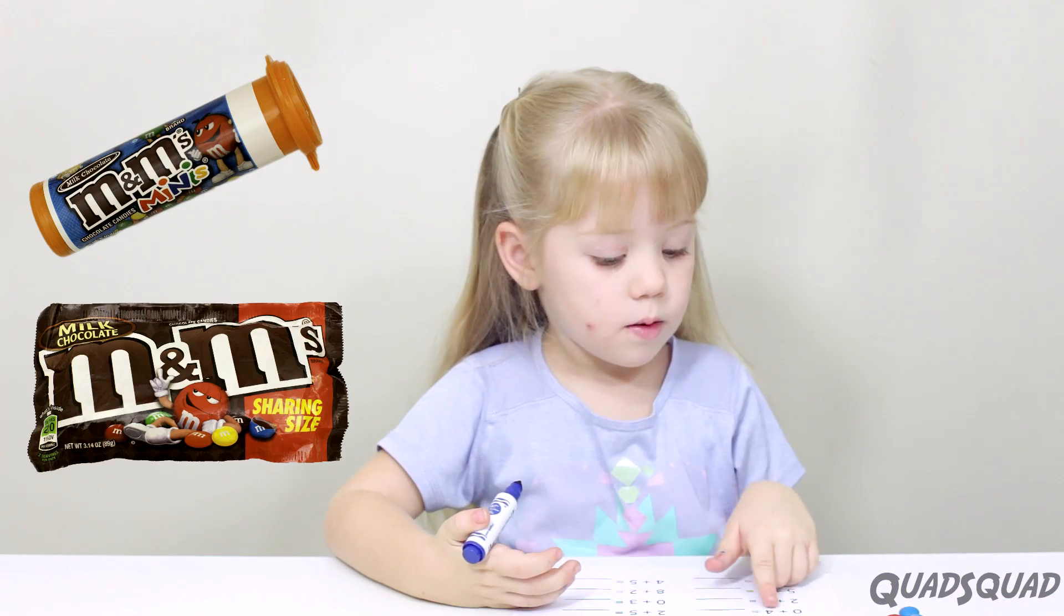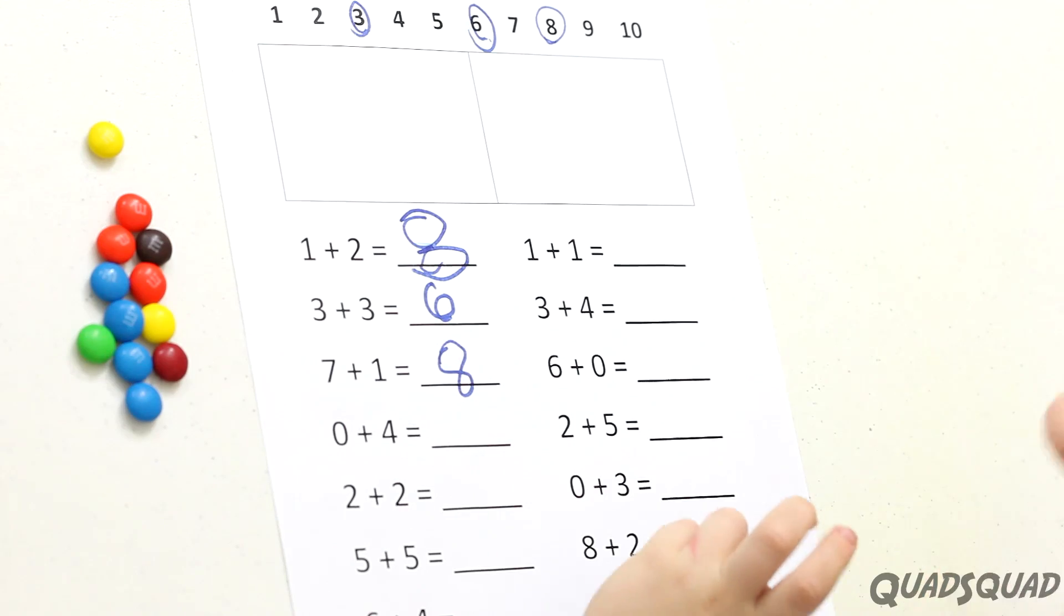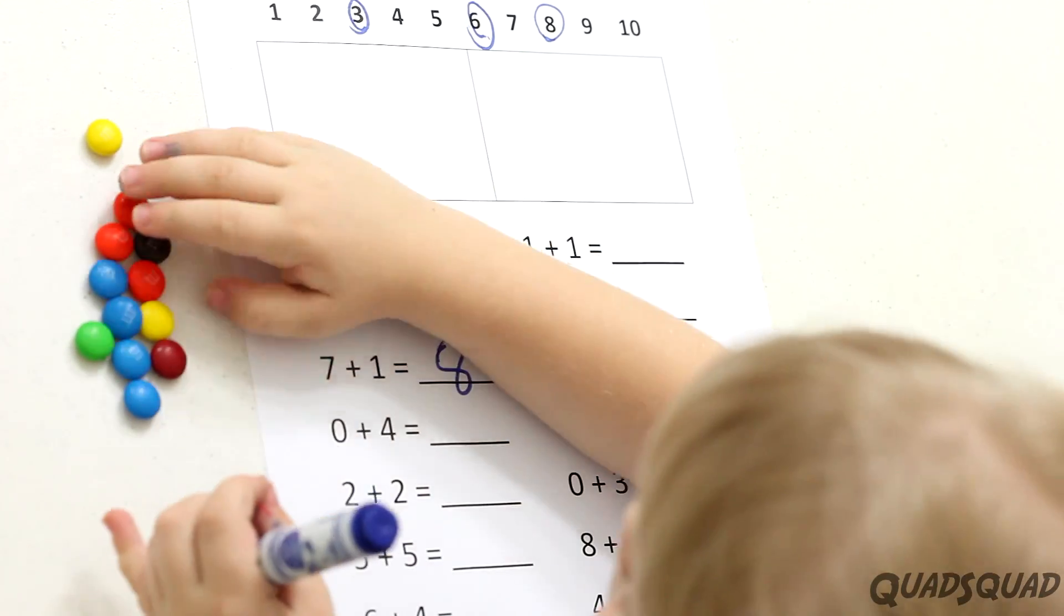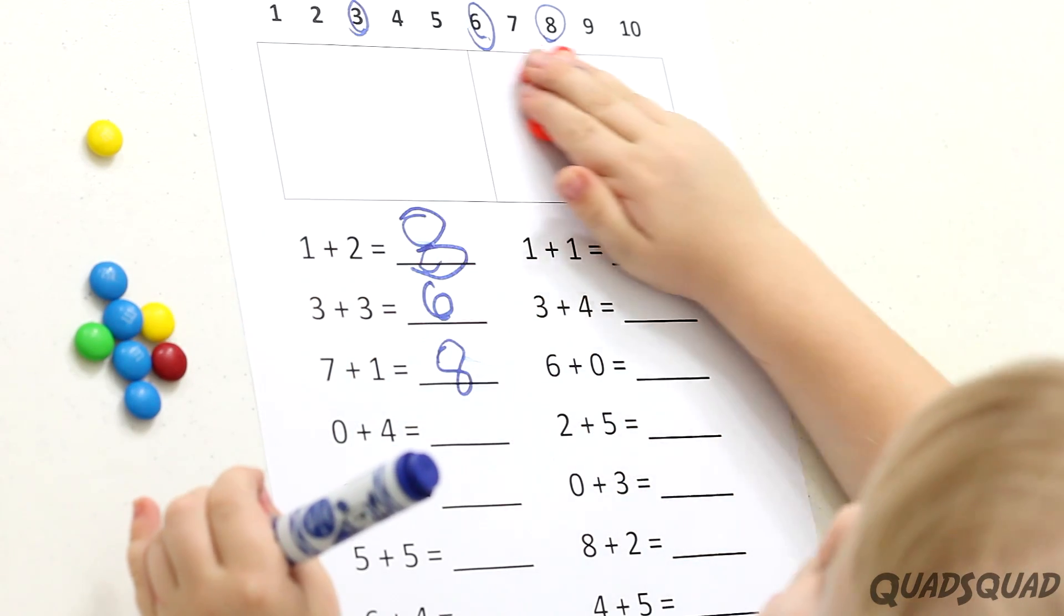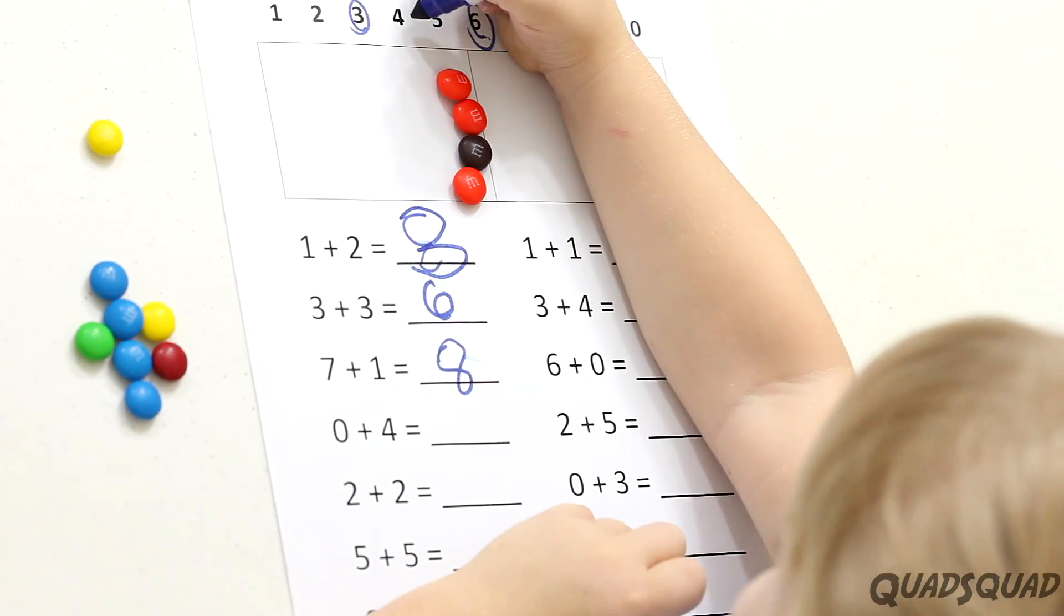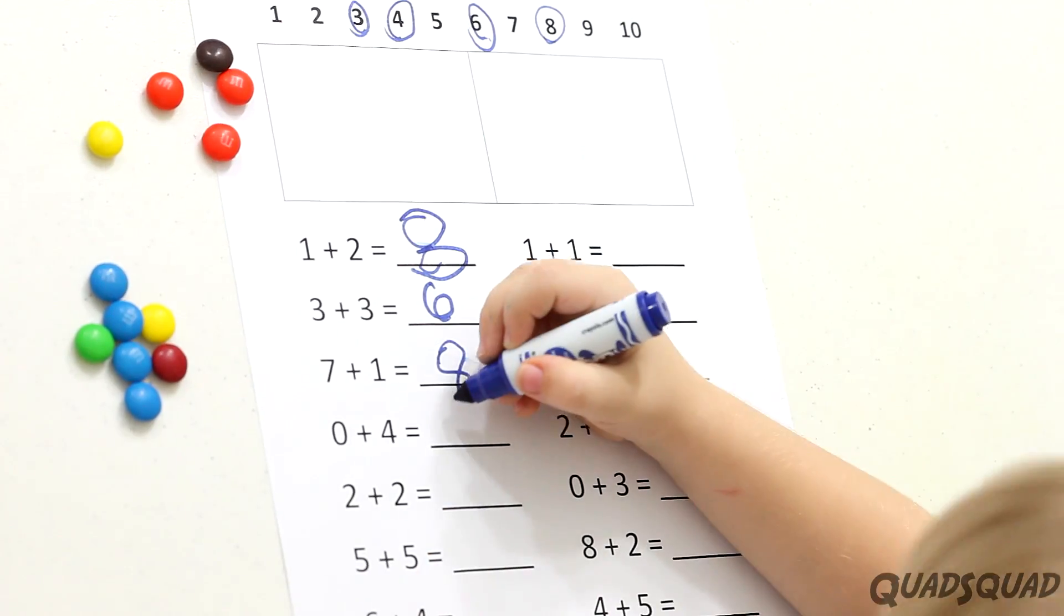Next question, what's zero plus four? So we put four in this box, put zero in that box. Let's get putting four. So let's count them all up. Only four is left. So we circle the four. Add four here.